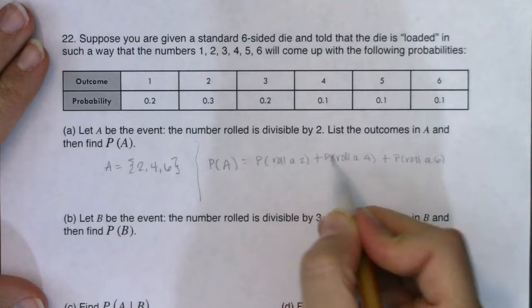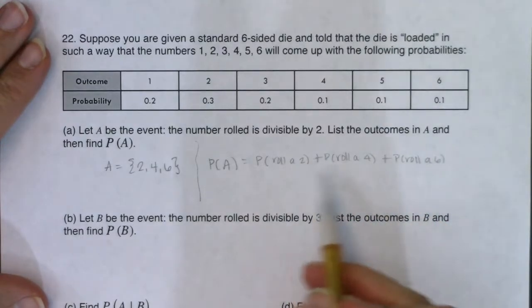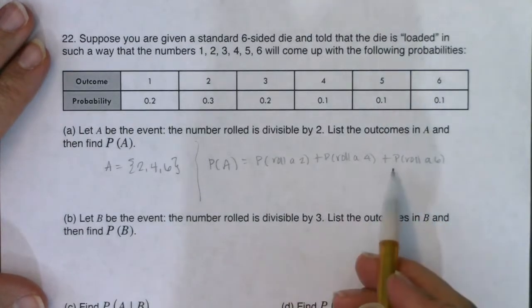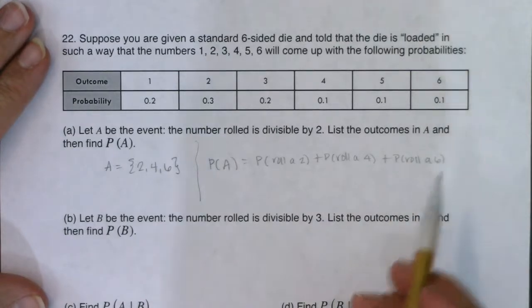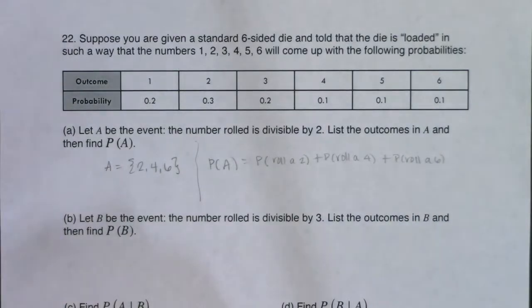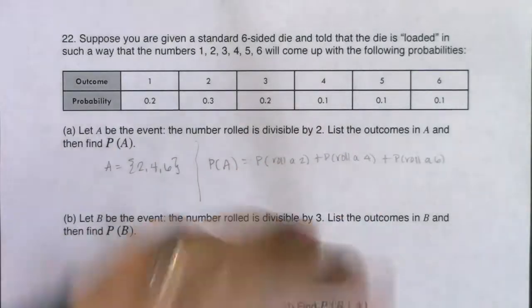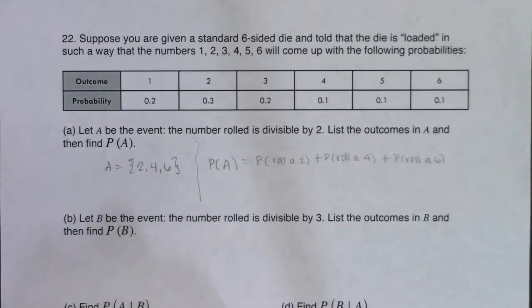Okay, and these are disjoint events. That's why we just add the probabilities with that formula one for the or. There's nothing to subtract out because they're disjoint. When you roll one die, you can't roll a two and a four at the same time. They're disjoint. You did one or the other.